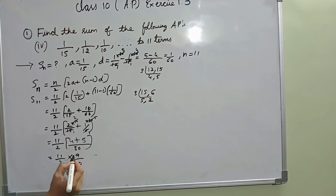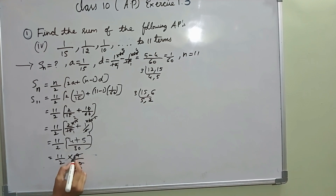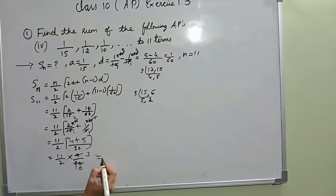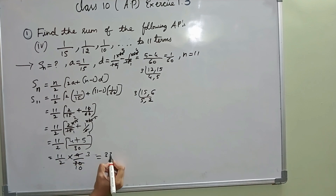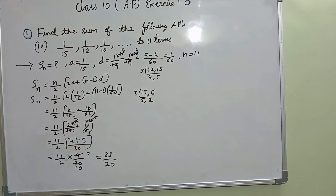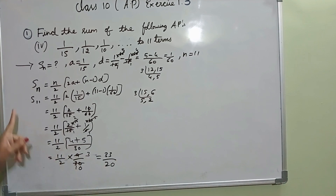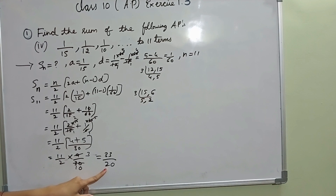It is divisible: 9 by 30 simplifies to 3 by 10. Then 11 by 2 into 3 by 10: 11 into 3 is 33, and 2 into 10 is 20. So the sum of the 11 terms is 33 by 20.